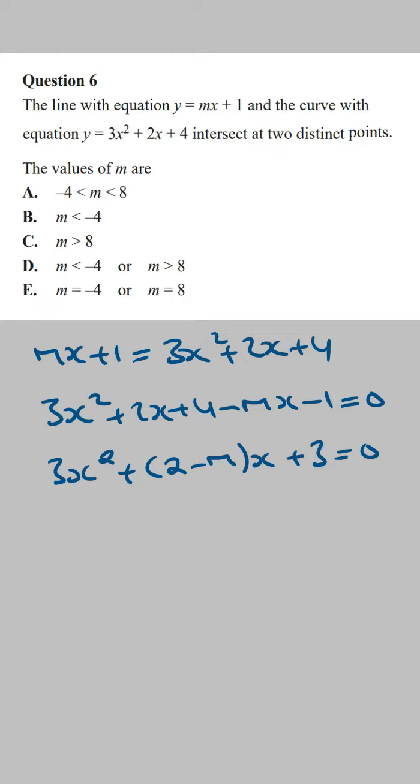We now have a quadratic equation. For this equation to have two distinct solutions, then the discriminant, which is b squared minus 4ac, has to be larger than 0. This is going to be the value of a, this is the value of b, and this is the value of c.